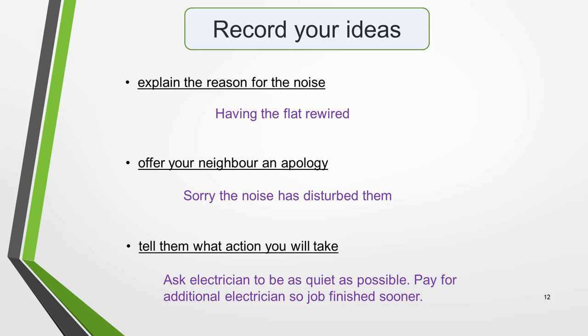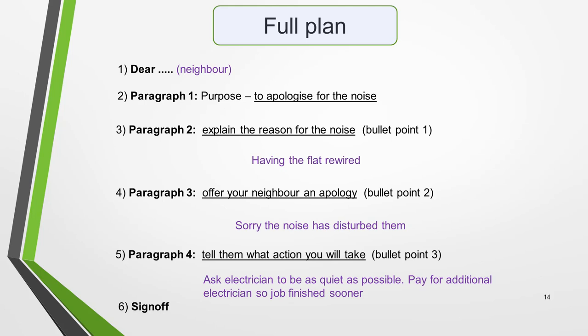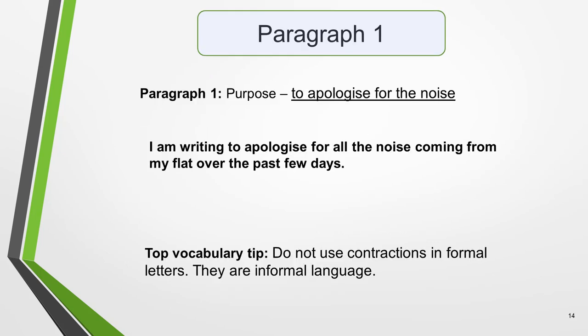Taking time to plan makes writing IELTS letters far quicker and easier, and you will write a better letter and get higher marks. So let's write our letter. Here's our plan again with all the notes added in — pause the video if you want to spend a few minutes studying it. We've already decided on the greeting, so we'll start by writing paragraph one. In the first paragraph, you must state the reason for writing the letter — its purpose — which is to apologise for the noise. Many students make the mistake of missing this purpose sentence out, but it's very important and including it will gain you marks. It only requires one sentence, and here's an appropriate example for our letter of apology: 'I am writing to apologise for all the noise coming from my flat over the past few days.'